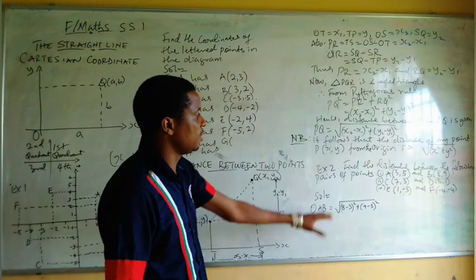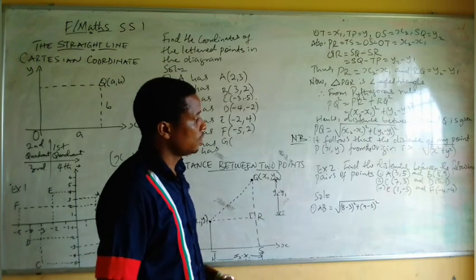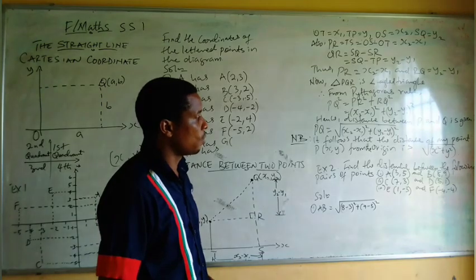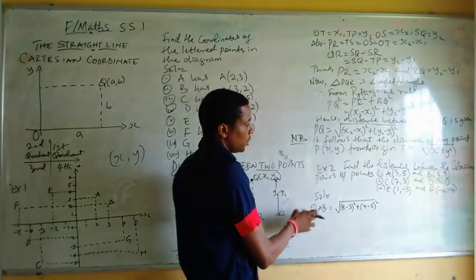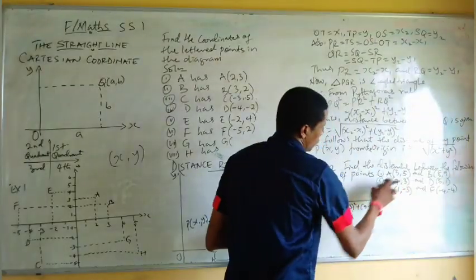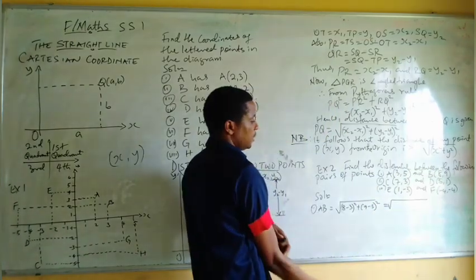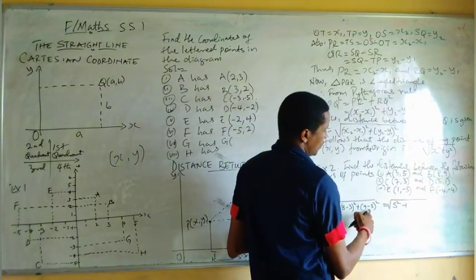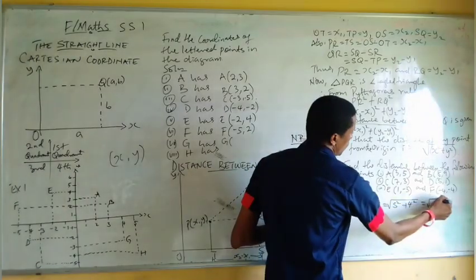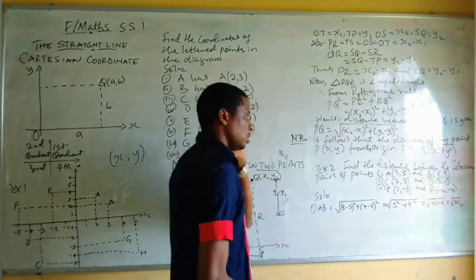Find the distance between the following pairs of points. For the first one, the distance AB equals the square root of (X2 minus X1) squared plus (Y2 minus Y1) squared. That gives us the square root of (8 minus 3) squared plus (9 minus 5) squared, which is the square root of 5 squared plus 4 squared, equal to the square root of 25 plus 16, and that is the square root of 41.